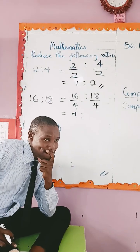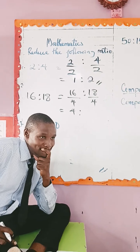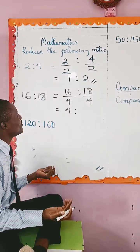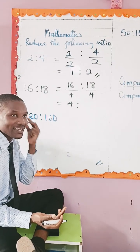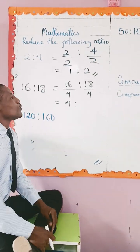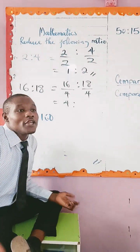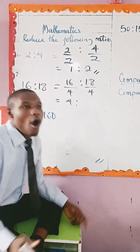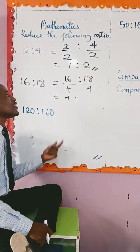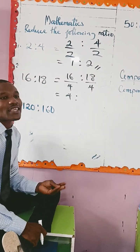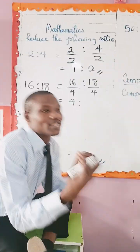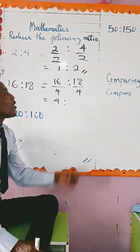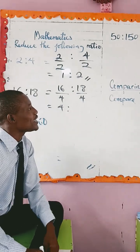The answer was two, because two can divide sixteen and eighteen. But it's preferable to use four because four will give you the answer easier and faster. So four into eighteen.